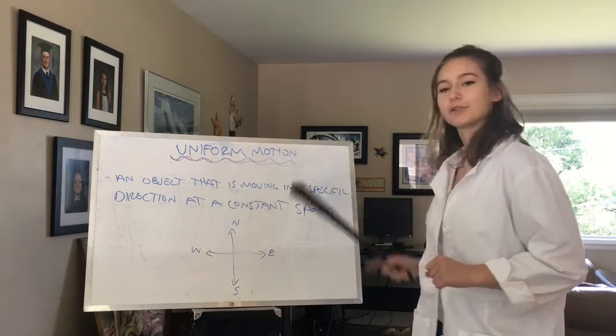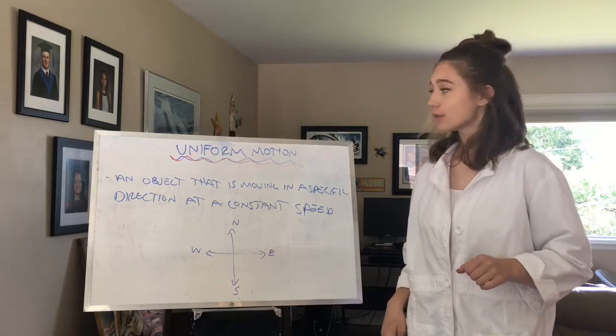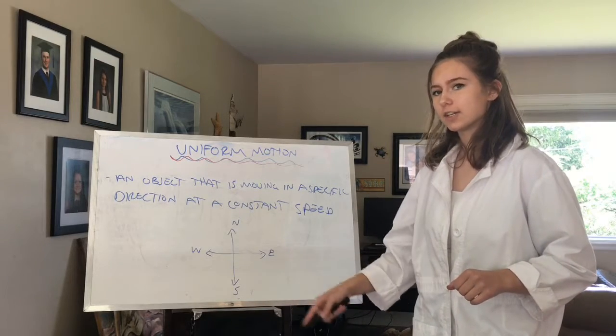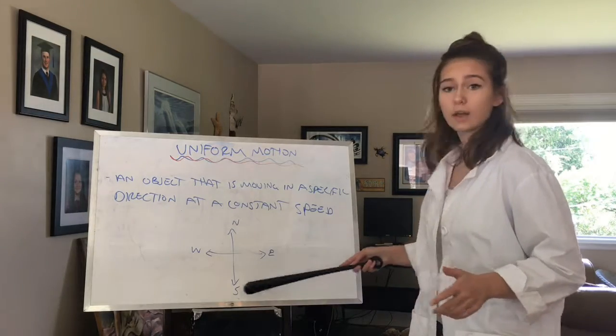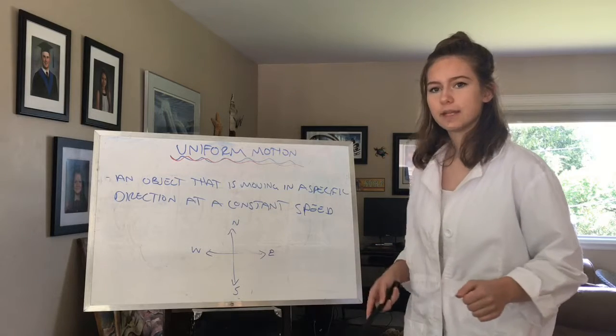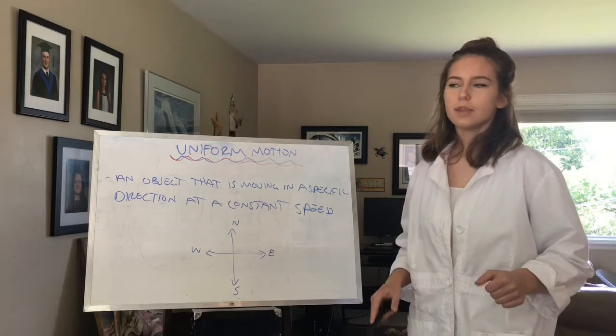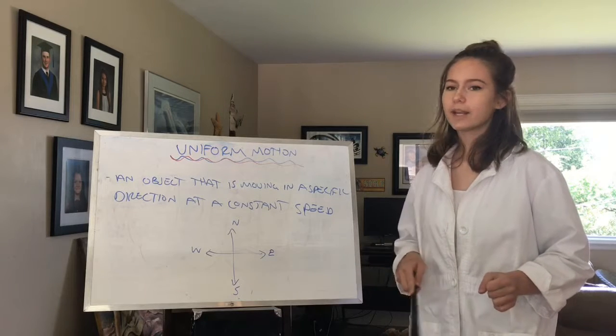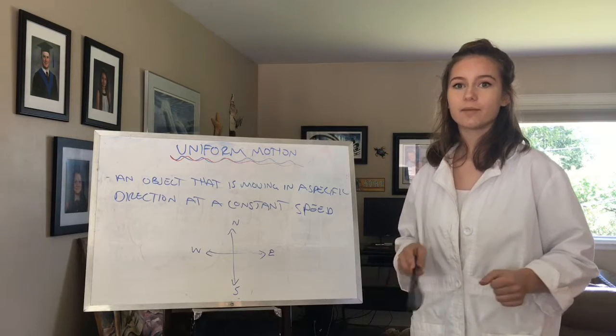First, let's discuss uniform motion. The definition for uniform motion is an object that is moving in a specific direction, whether it be north, east, south, west, at a constant speed, no matter what that speed is. To visualize what uniform motion would look like on a graph, I'm going to insert a picture. Take a look, and then we'll discuss it later.